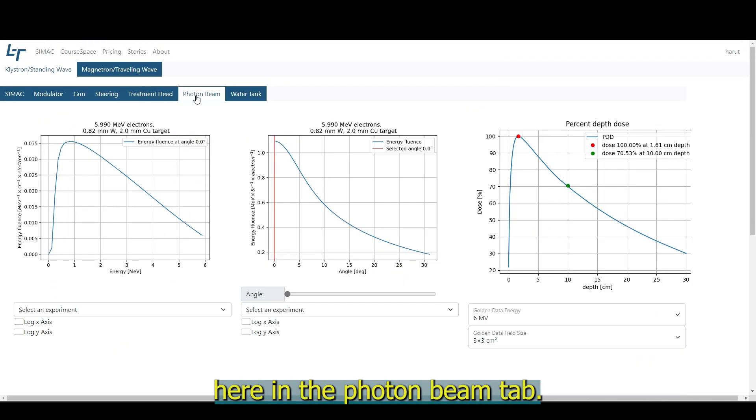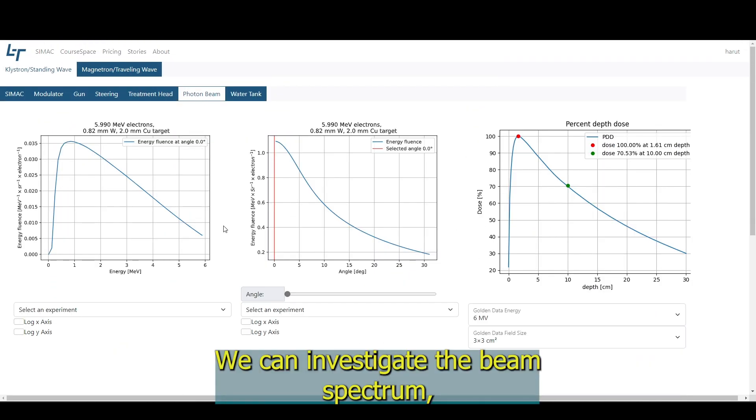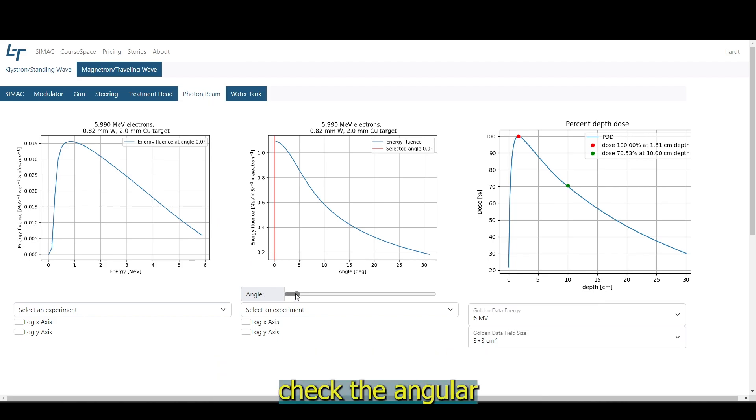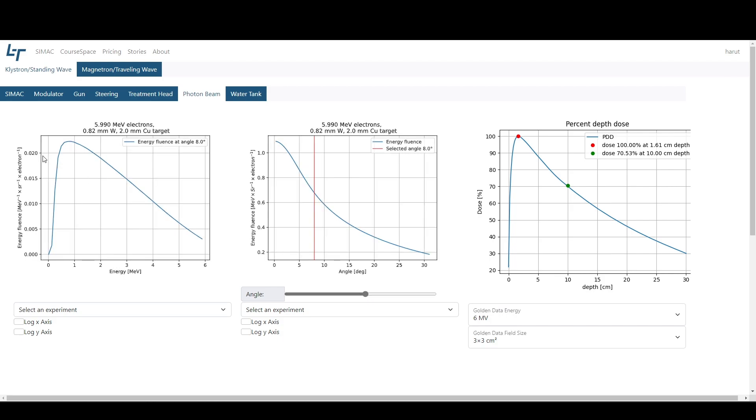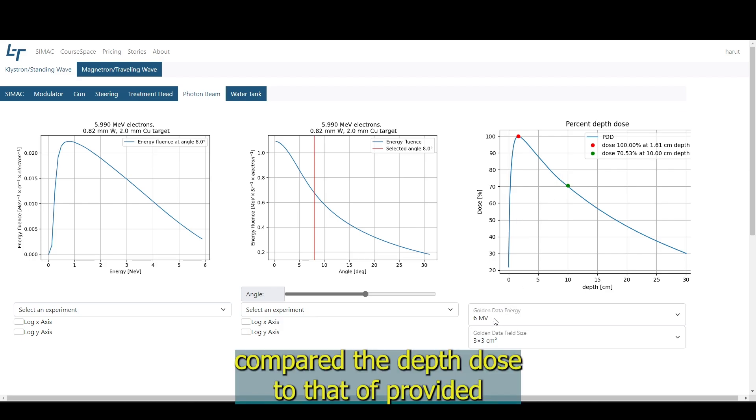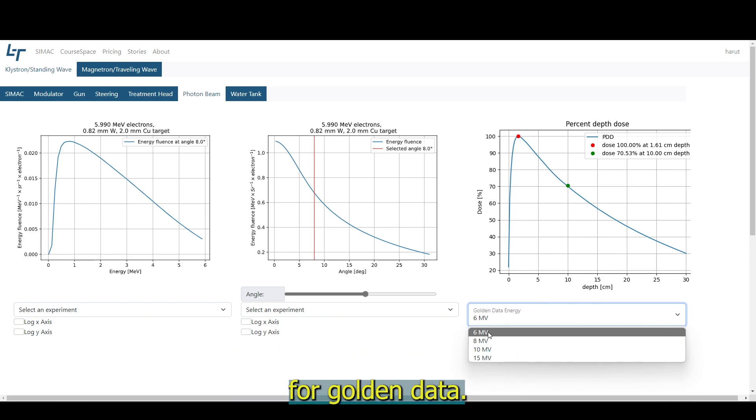Here in the photon beam tab, we can investigate the beam spectrum. Check the angular distribution of the beam. Compare the depth dose to that of provided for golden data.